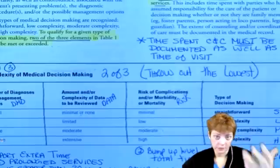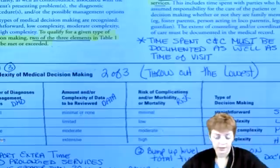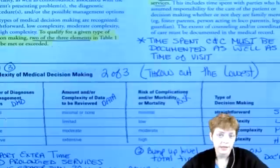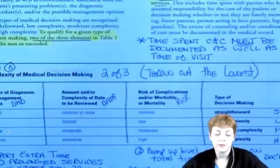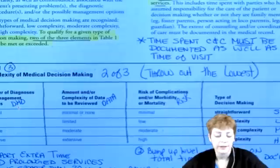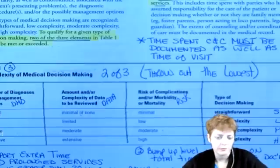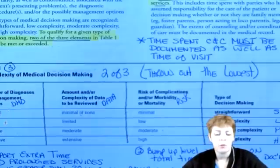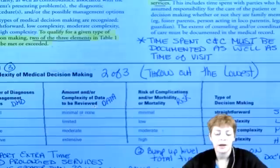You've probably seen E&M score sheets that try to help quantify these things, but for purposes of the board exam, you're not bringing in an audit tool, so you are going to have to use this language: minimal, limited, multiple, extensive. Minimal versus limited sound pretty similar, so what you'll typically find is they count 1, 2, 3, 4 — one diagnosis or management option is minimal, limited is for two, etc.